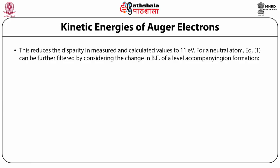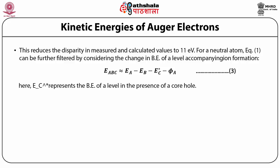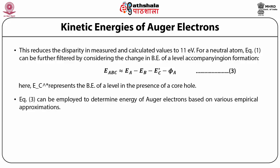This reduces the disparity in measured and calculated values by 11 eV. For the neutral atom, Equation 1 can be further refined by considering the change in binding energy of a level accompanying ion formation. Here, E_ABC = EA − EB − EC* − φ_A (Equation 3), where EC* represents the binding energy of the C level in the presence of a core hole. Equation 3 can be employed to determine the energy of Auger electrons based on various empirical approximations.